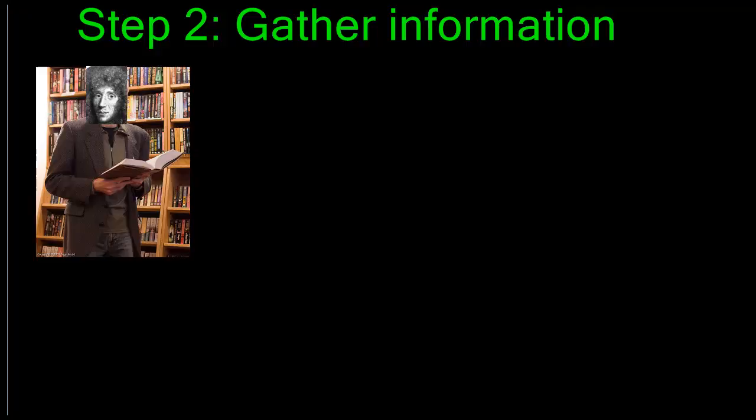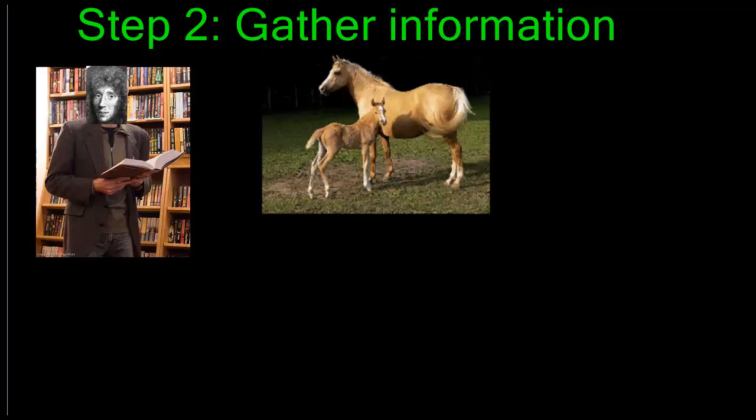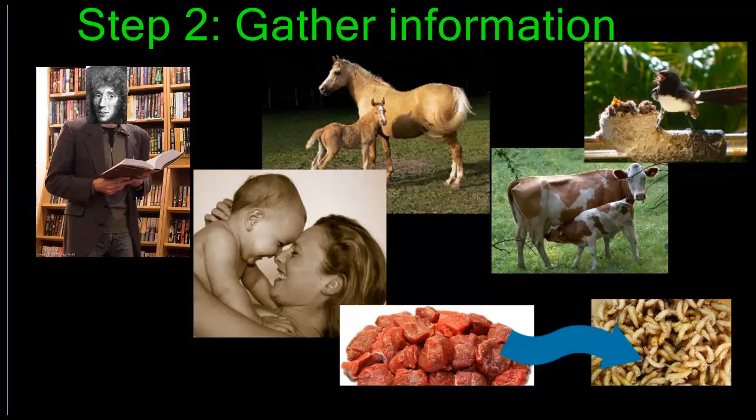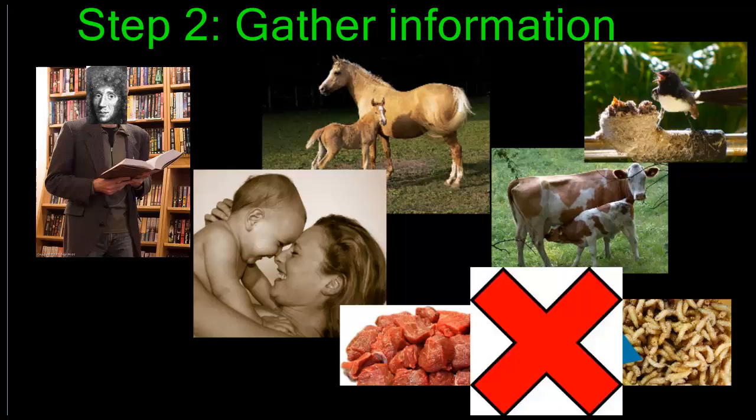He doubted that something alive could come from something dead. He looked around in his environment and noticed, well, horses come from other horses, cows come from other cows, birds come from other birds, and people come from other people. So how could maggots possibly come from something dead, like decaying meat? So based on this information that he gathered from his surroundings and his direct observation, he decided that spontaneous generation could definitely not be the answer to this question.